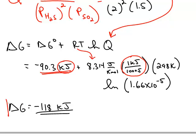So when I do this calculation, I get delta G is negative 118. So this is under non-standard conditions. This reaction is also spontaneous under these values.